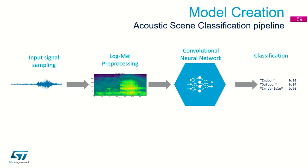The conclusion is that we can use the well-known structure of a neural network for picture recognition — a convolutional neural network — to recognize the audio scene. Because we have transformed the audio time domain signal into a picture in the frequency domain, this is our signal transformation flow: time domain, frequency domain, then a picture as input to the convolutional neural network, and then three classes to be classified: indoor, outdoor, and in-vehicle.